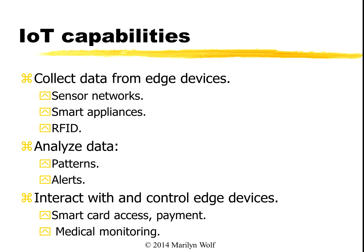The Internet of Things allows us to first collect data from edge devices. These could be sensor networks — there are sensor networks for the environment, for buildings, all sorts of things. They could be smart appliances, or RFID — radio frequency identification — which are those tags used for all sorts of merchandise. They're also used in proximity identification cards and all sorts of applications.